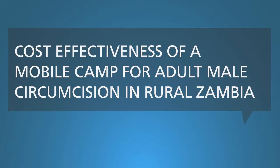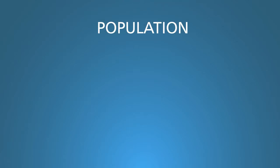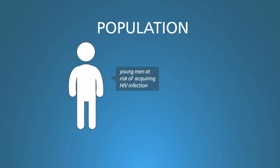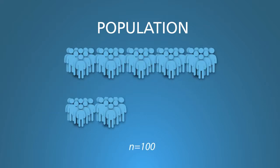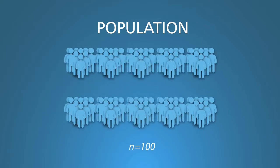Let's look at an example. Here's a basic decision tree to assess the cost-effectiveness of a mobile camp for adult male circumcision in rural Zambia to prevent HIV infection. This is a simplified version of the research question in segment number seven. You start with a description of the population — in this instance, young men at risk of acquiring HIV infection. Let's say we have 100 such men. It's easier to show and understand the calculations if you use a large round number like 100 or 1,000.